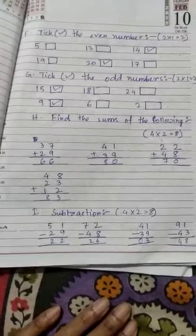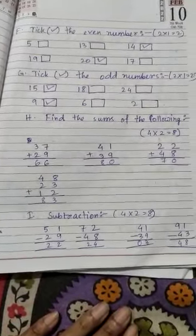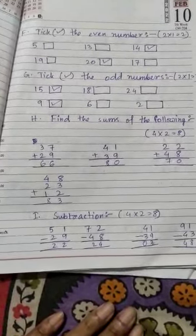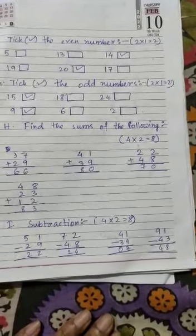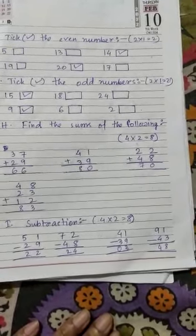Subtraction. 51 minus 29, 22. 72 minus 48, 24. 41 minus 39, 2. 91 minus 43, 48.